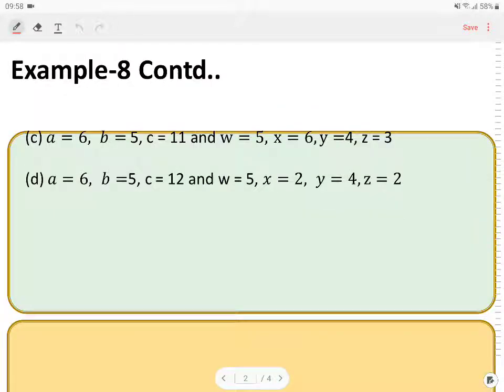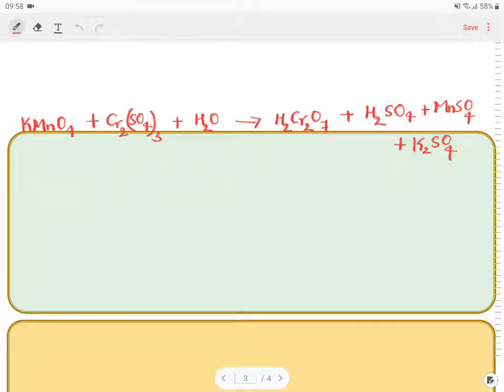Now to balance this, they have not specified any method. It's your wish, you can apply anything. I'll just do this balancing by using oxidation number method. That's very simple. So this is a given equation.